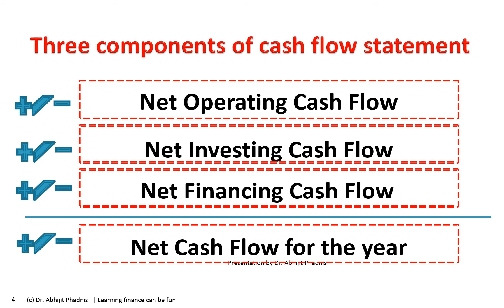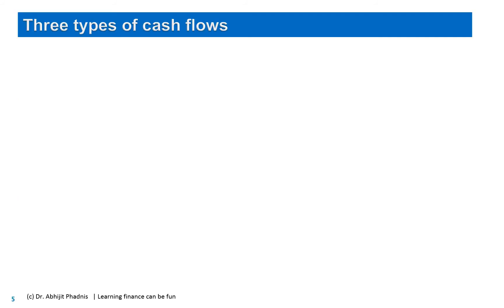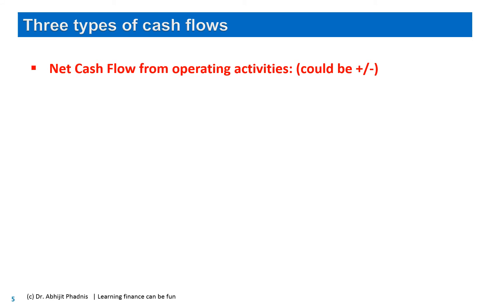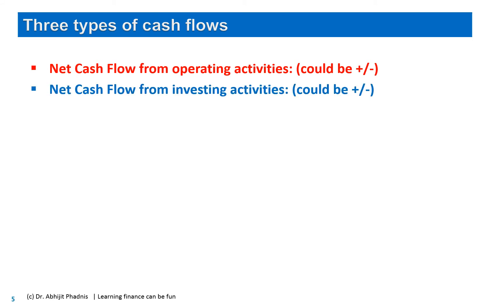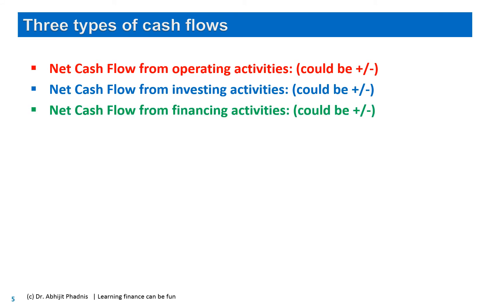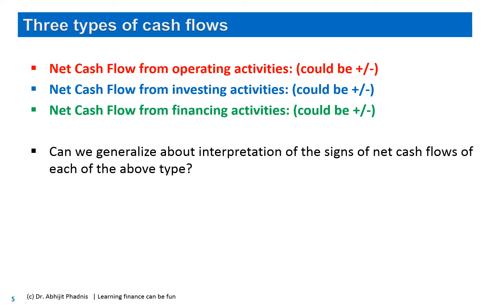The net result of all these pluses and minuses shows what happened for the whole year in terms of net cash flow. Can we generalize about the expected sign for each type? For operating cash flow, think about it: should a company be collecting more from customers than it pays to vendors, or paying more to vendors than it collects from customers?